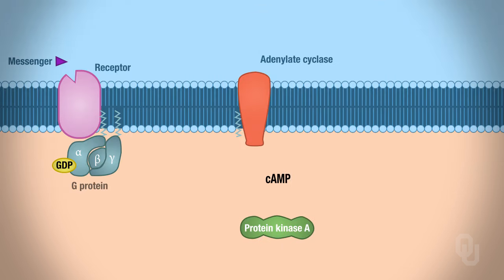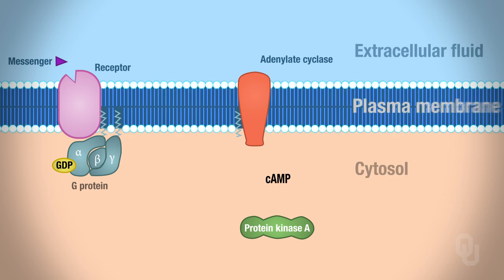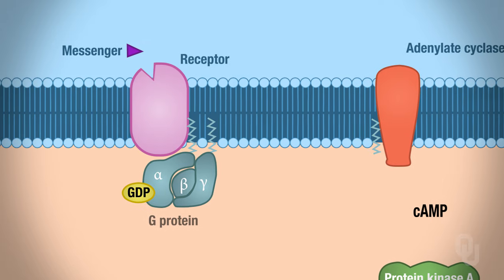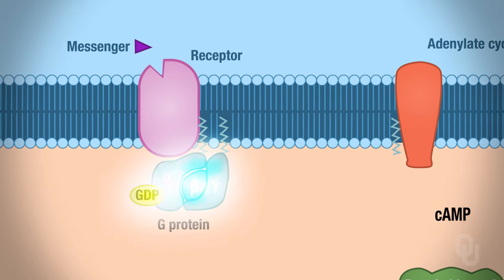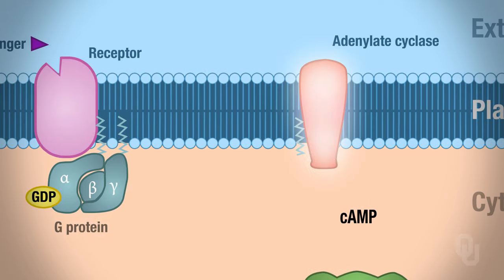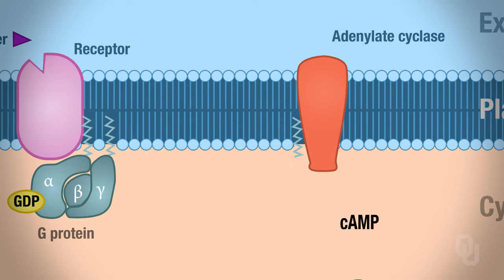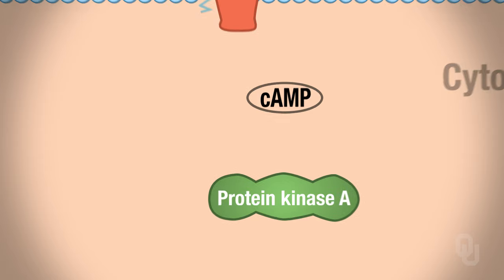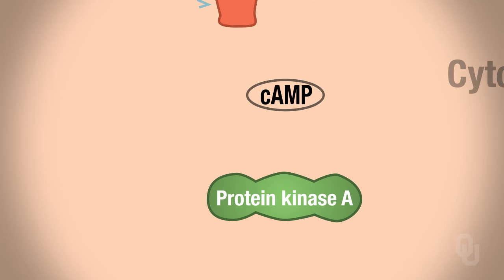Let's orient yourself to the cyclic AMP second messenger system. Here's the extracellular fluid in blue, in tan is the cytosol, and then we have the plasma membrane. Rather than just memorize the pathway, look at who the players are: here we have a receptor, a G-protein, adenylate cyclase which is the amplifier enzyme, cyclic AMP our second messenger, and protein kinase which always phosphorylates a protein.